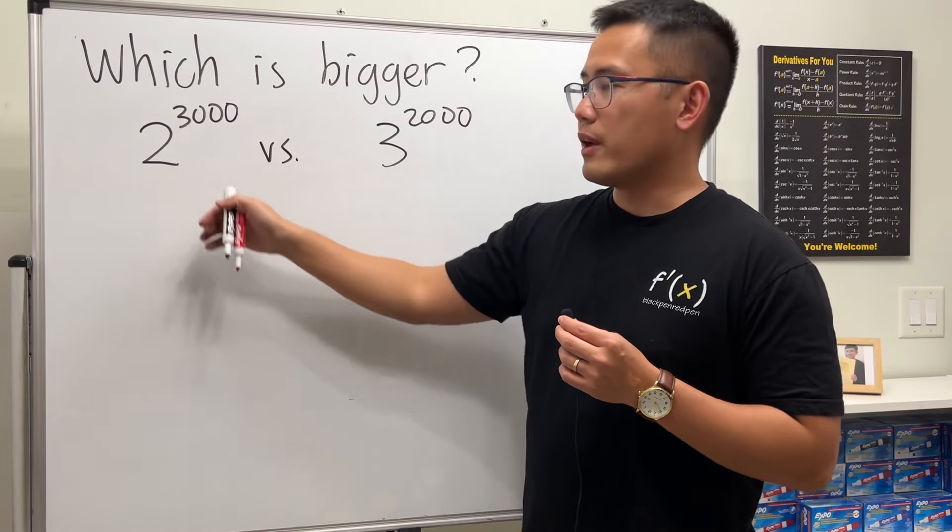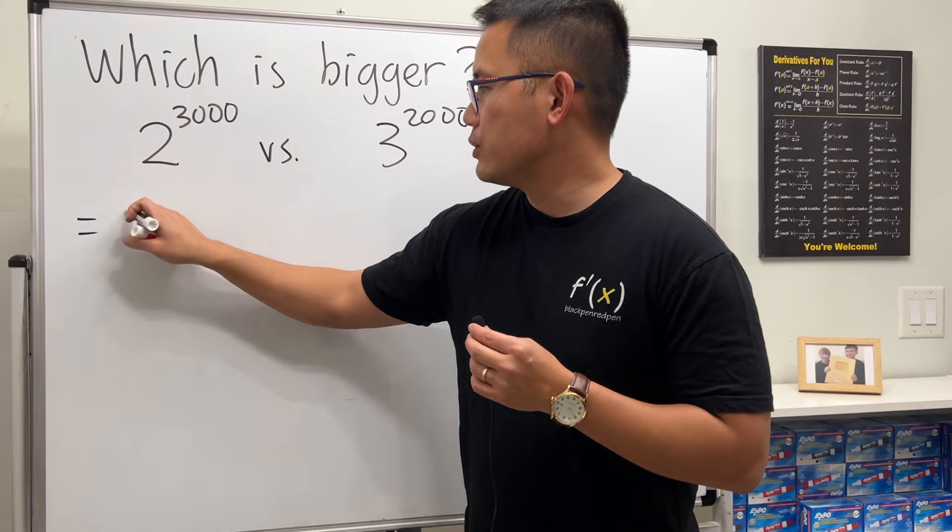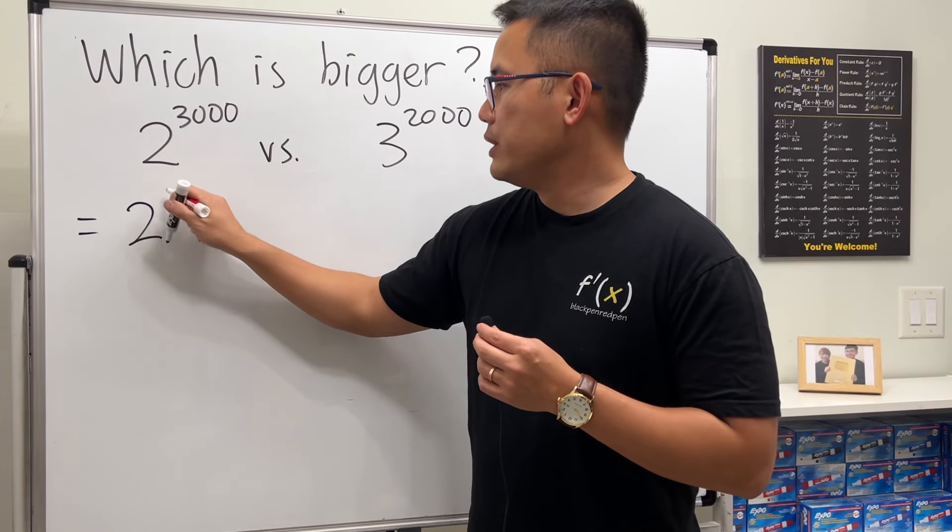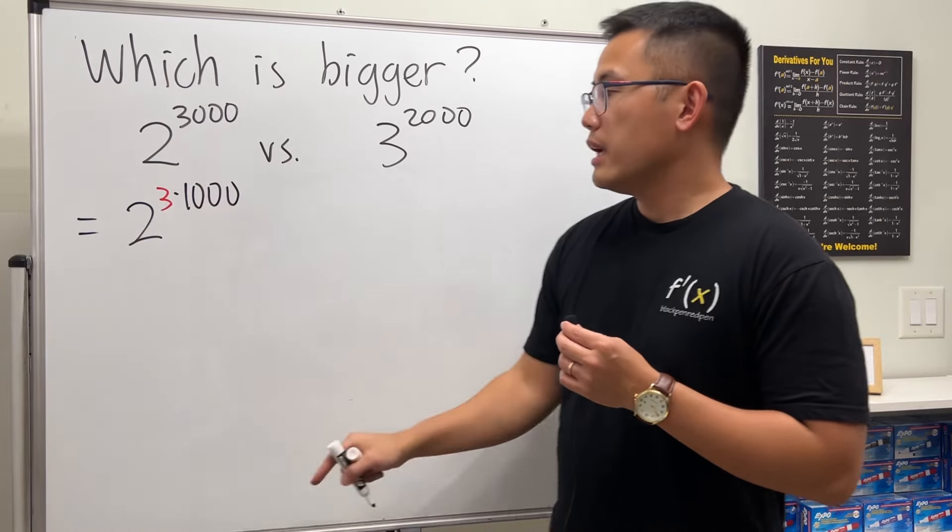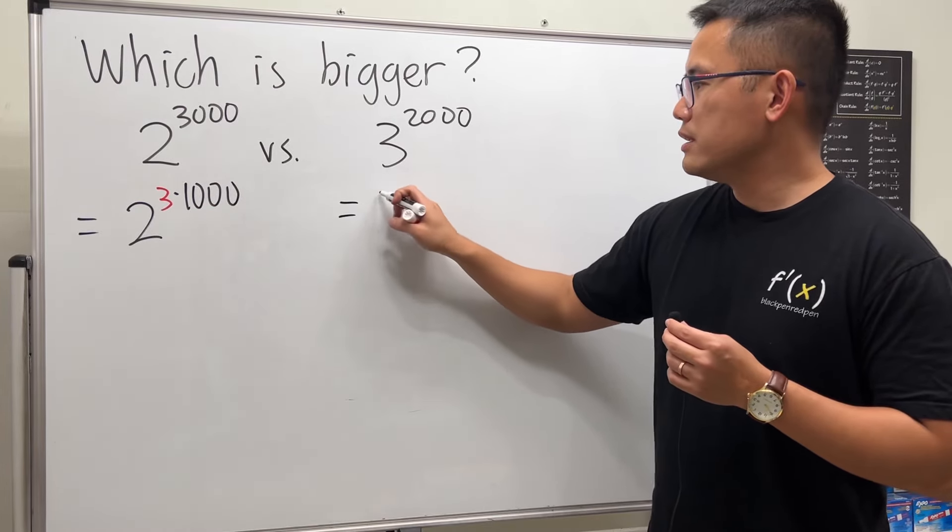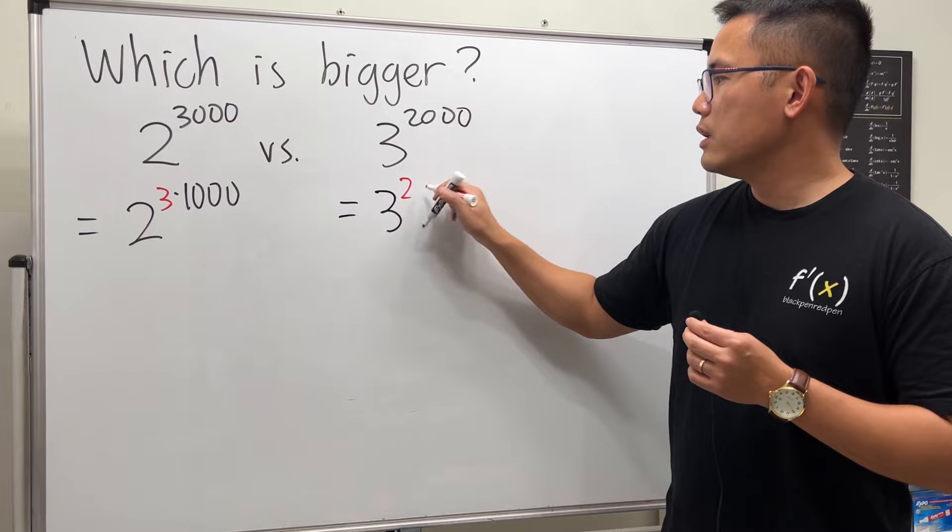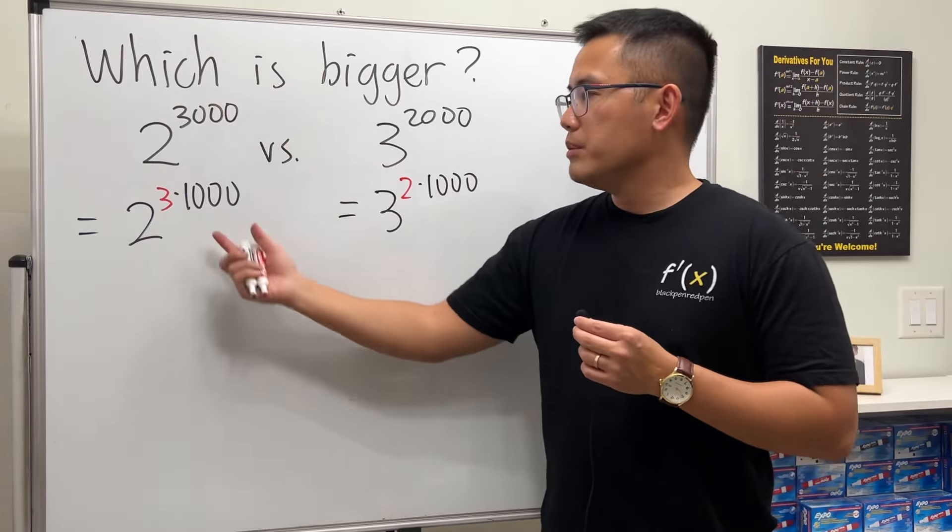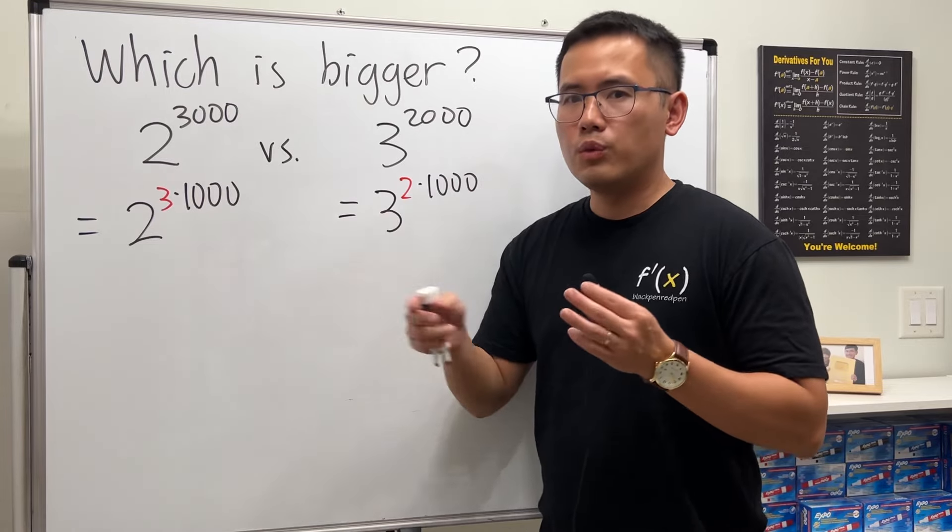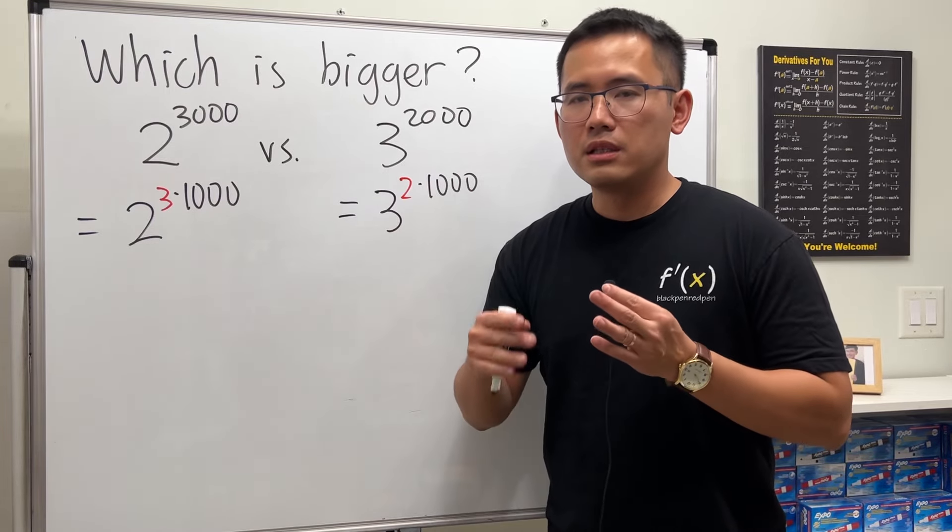So we can look at this as 2 raised to the 3 times 1000th power, like this. Likewise, this we can also look at as 2 times 1000th power. Why? Because if we have the same power, we can just compare the base—the bigger the base, the bigger the whole thing will be.